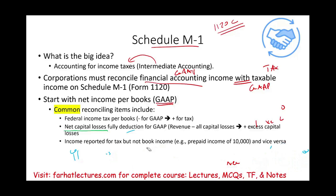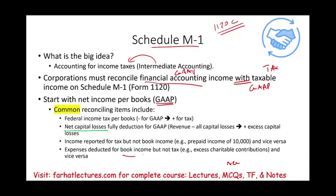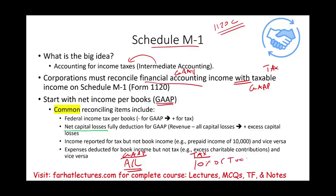Another example: expenses deducted for book but not for tax. There are certain expenses you can deduct now for book purposes but will deduct for tax later. For example, excess charitable contributions. For GAAP, you can deduct the entire charitable contribution. For tax, you are limited to 10% of taxable income. Therefore, you may not be able to deduct all of it now. You deduct all of it this year for books, but next year you carry over the excess and take it for tax in year two. Again, a difference in deduction timing.